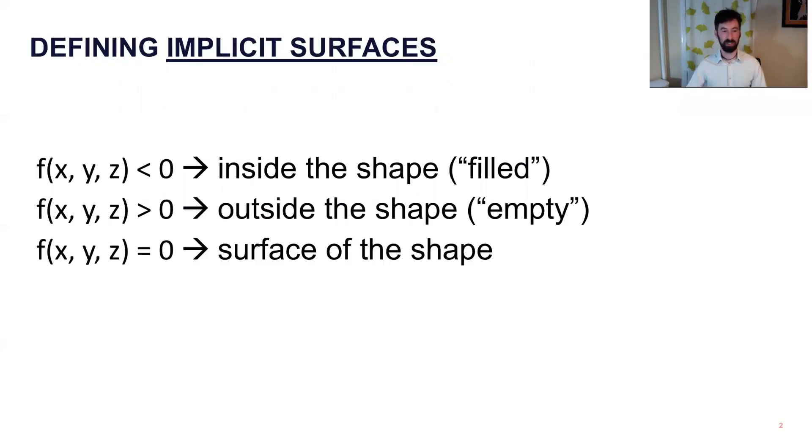When I say implicit surfaces here, I'm talking about functions which you can evaluate at some point somewhere in space, at an xyz position, that return a single value. And so we say that if that value is negative, we're inside the shape. If it's positive, we're outside, otherwise we're on the surface of the shape. So we have an isosurface where the function is zero.